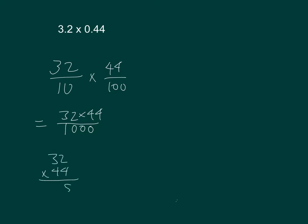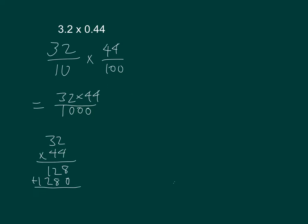4 times 2 is 8, 4 times 3 is 12. Place a zero. 4 times 2 is 8, 4 times 3 is 12, and then we add those together. 8, 0, 1, then 1 plus 1 is 2, plus 2 is 4, giving us 1,408 thousandths.